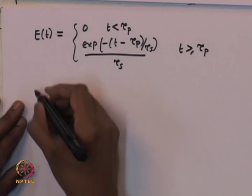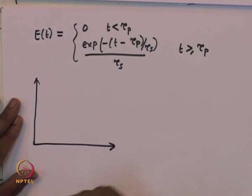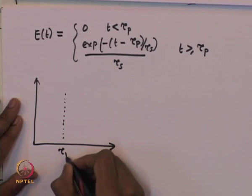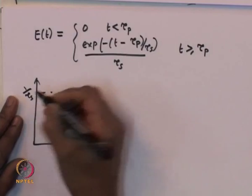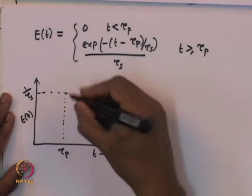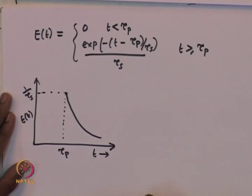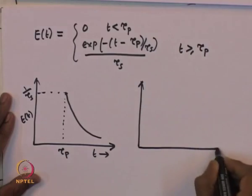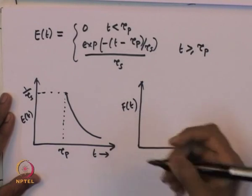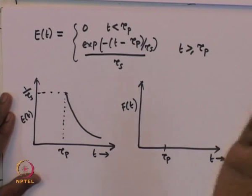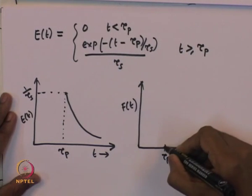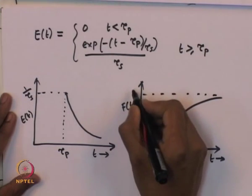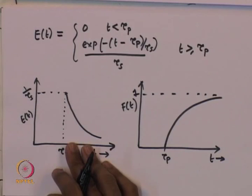We can plot this function: it will start at tau_p because the plug flow reactor introduces a delay, with an initial value of 1/tau_s and then an exponential decay. Similarly, the F curve will start at tau_p and then show an exponential increase going all the way up to one. That is the residence time distribution for CSTR followed by a plug flow reactor.